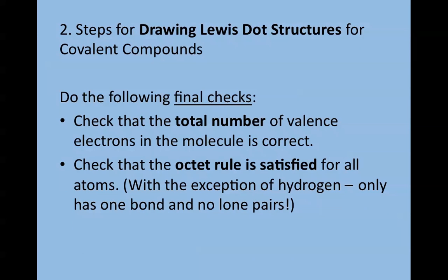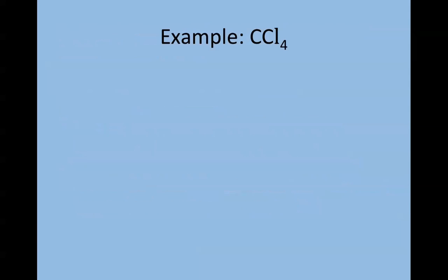Then do a final check. Add up all the electrons in your compound to make sure you're using the exact number allowed. Check that the octet rule is satisfied—make sure all atoms have eight electrons except for hydrogen, which should only have one bond and no lone pairs. That's a common mistake for students.